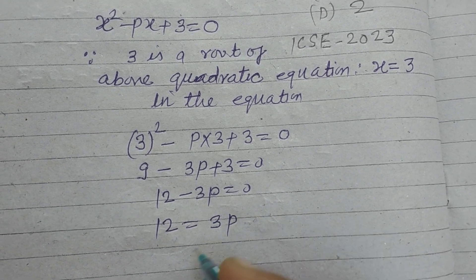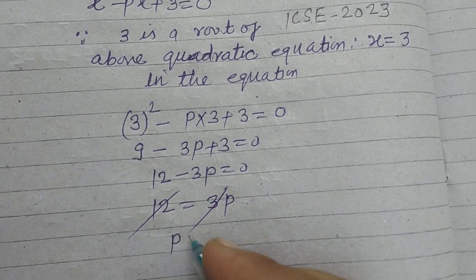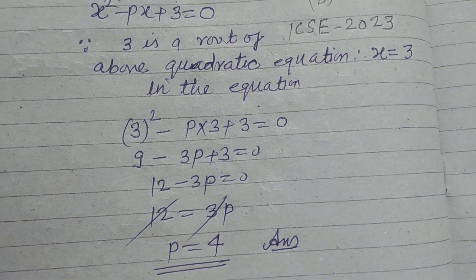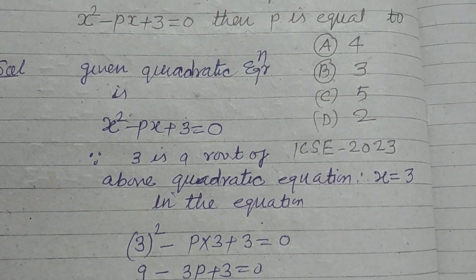12 equal to 3p. 3 times 4 is 12, so p equal to 4. Therefore p equal to 4 when x equal to 3 is a root of the